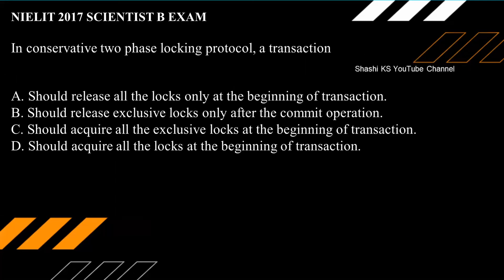The next question was asked in a NIT-JIT scientist examination. In conservative two-phase locking protocol: option A — should release all locks only at the beginning of transaction; option B — should release exclusive locks only after the commit operation; option C — should acquire all exclusive locks at the beginning; option D — should acquire all the locks at the beginning of transaction. In conservative 2PL, the transaction must acquire all locks for all data items — read set and write set — before starting execution. So the right answer is option D: should acquire all the locks at the beginning of transaction.